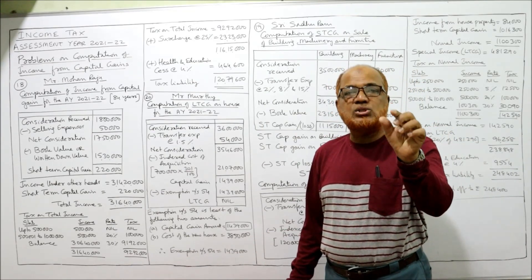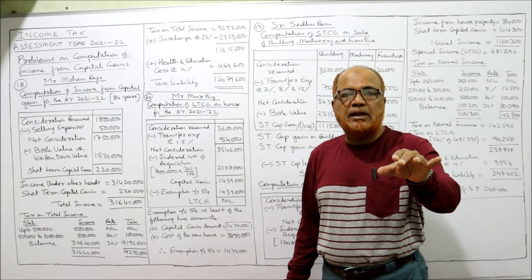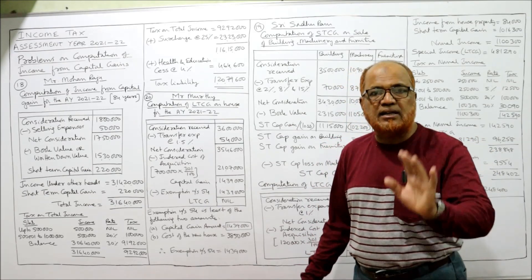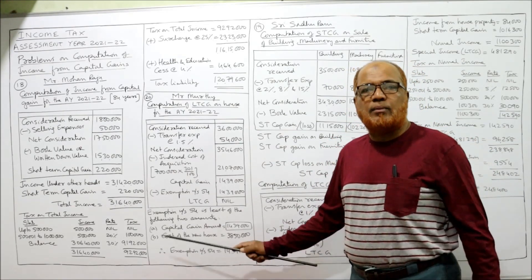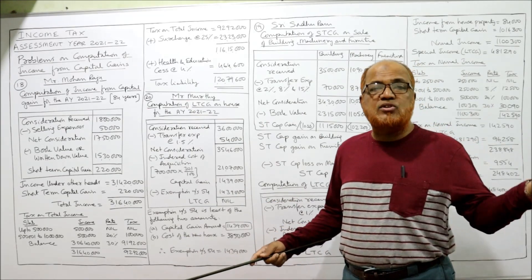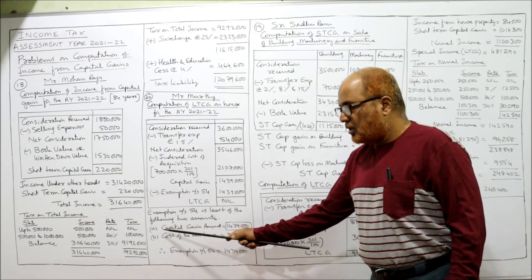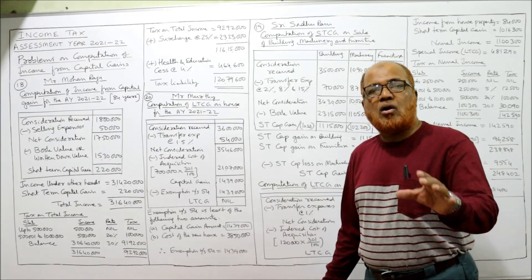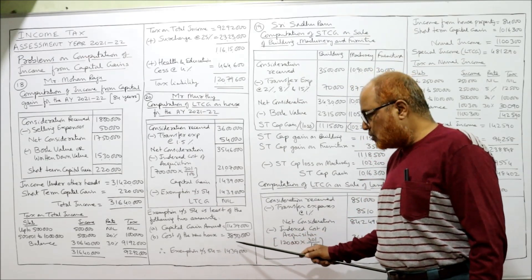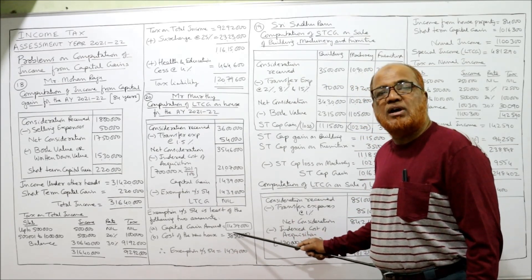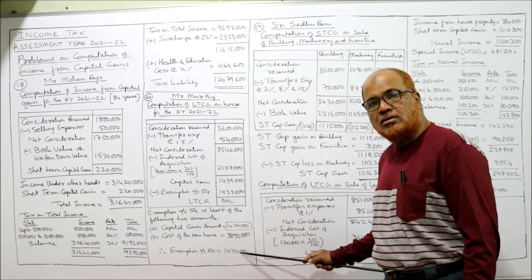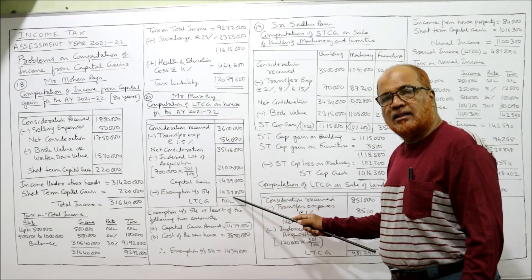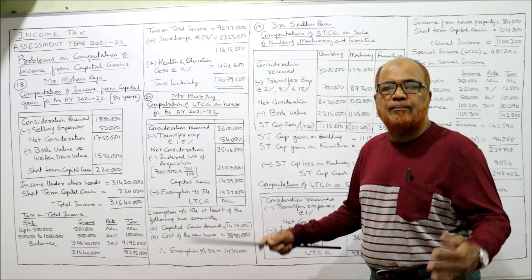In working notes, write: the assessee sold one residential house and within the stipulated period purchased another residential house, so exemption is allowed under Section 54. The exemption is the least of the following two amounts — this is the provision in the Income Tax Act 1961: (1) the capital gain amount = 14 lakh 39 thousand; (2) the cost of the new house = 38 lakh 50 thousand. Whichever is less is allowed as exemption, so 14 lakh 39 thousand is the exemption. After deducting the exemption, LTCG is nil — nothing is taxed.